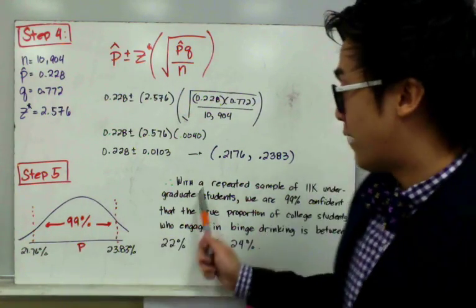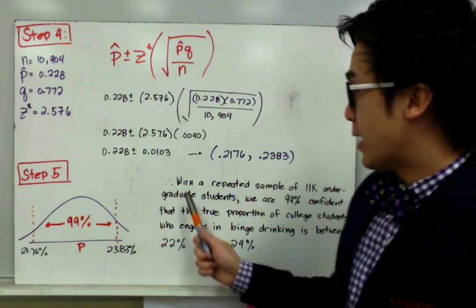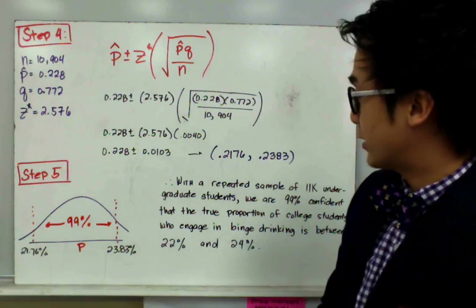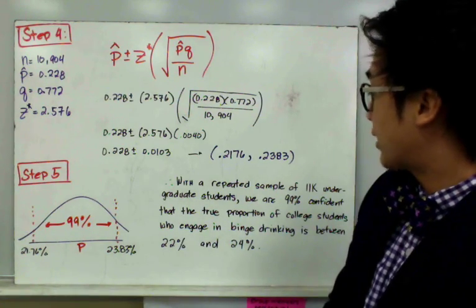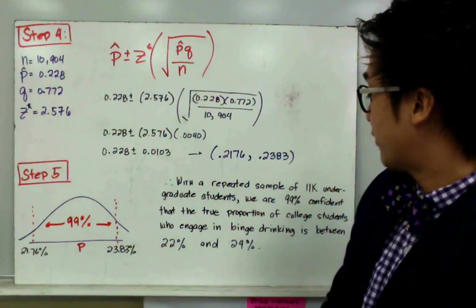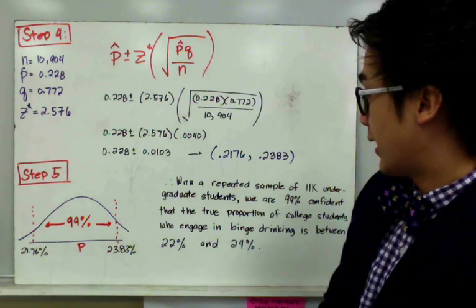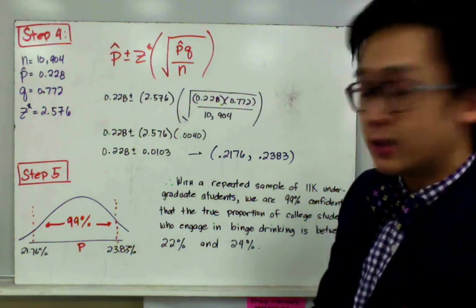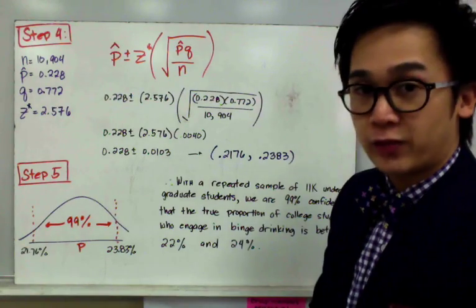For step number five, our conclusion will be: with a repeated sample of 11,000 undergraduate students, we are 99% confident that the true proportion of college students who engage in binge drinking is between 22% and 24%.